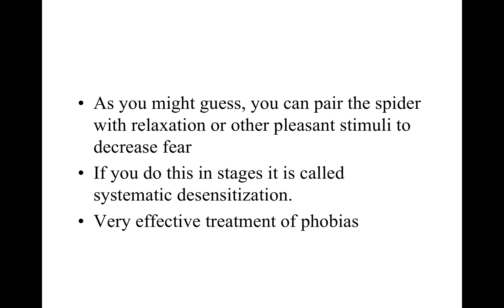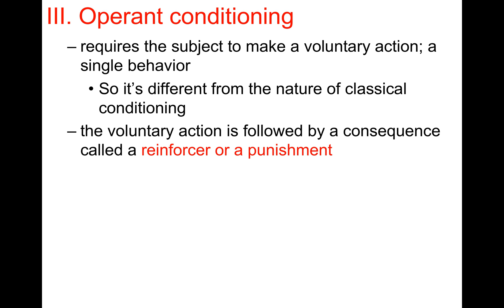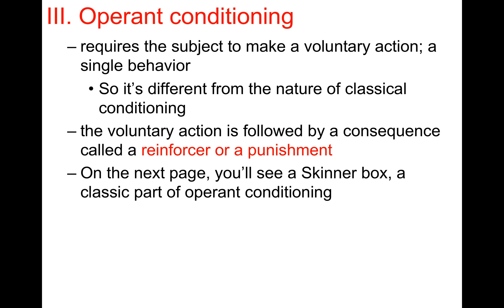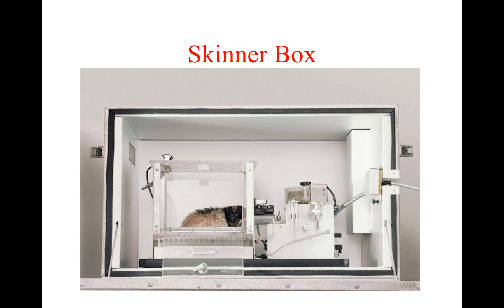Now let's move to operant conditioning — a totally different paradigm than classical conditioning. In operant conditioning, you require the subject to make a voluntary action or behavior. This action is followed by a consequence called a reinforcer or a punishment. In the classic Skinner box, the rat learns to press a bar — a voluntary behavior — to get a treat, which is a reinforcer that strengthens bar pressing.